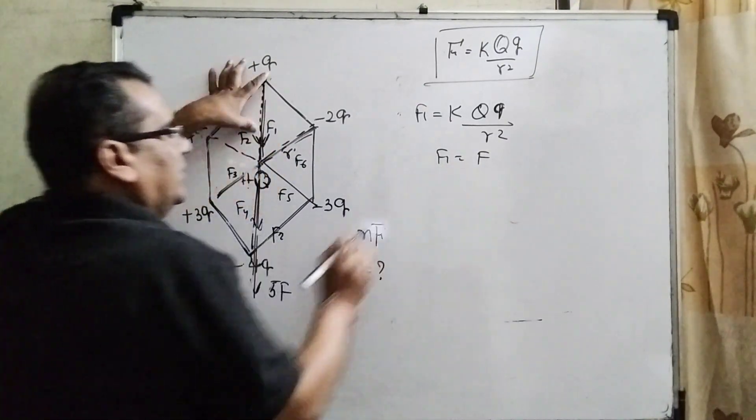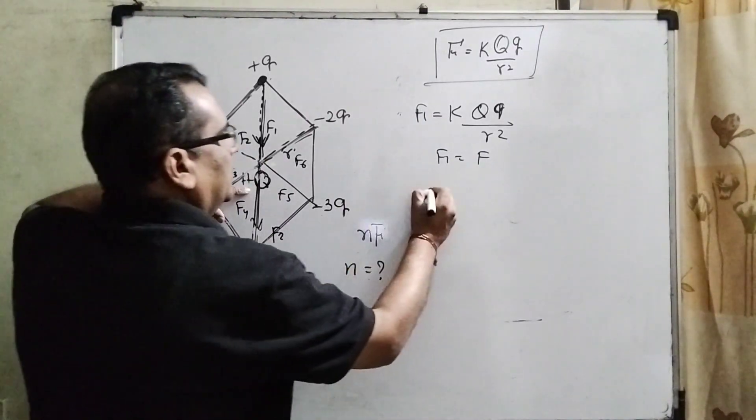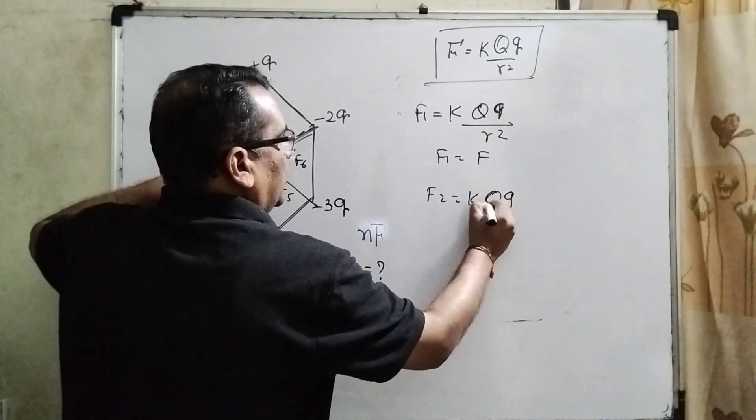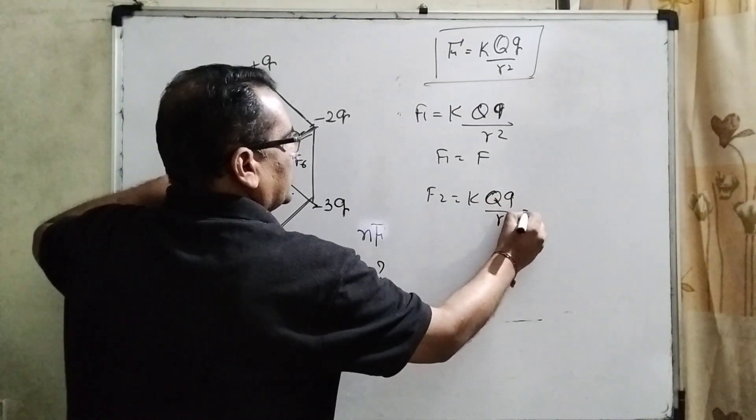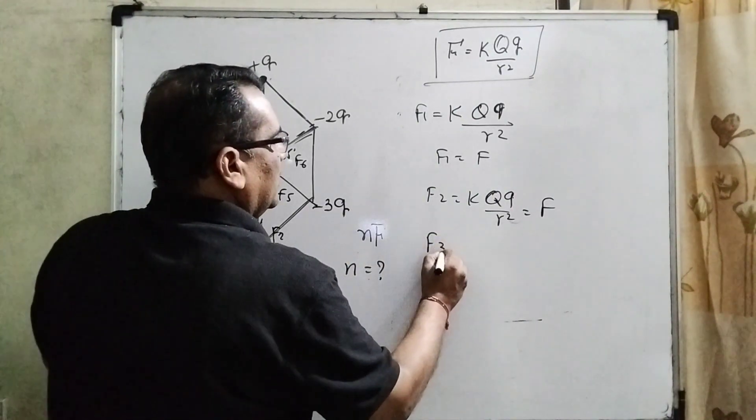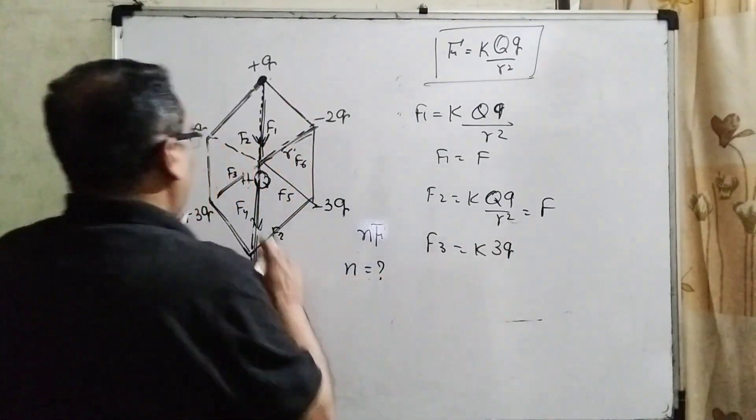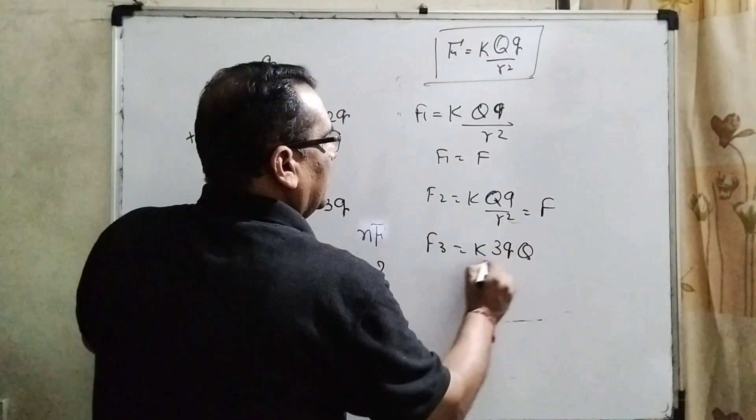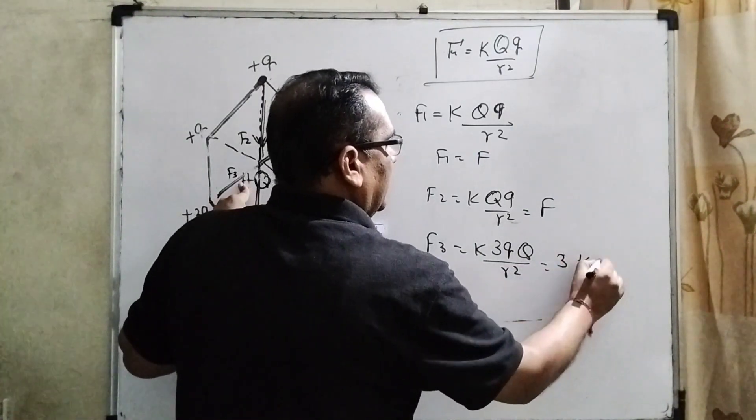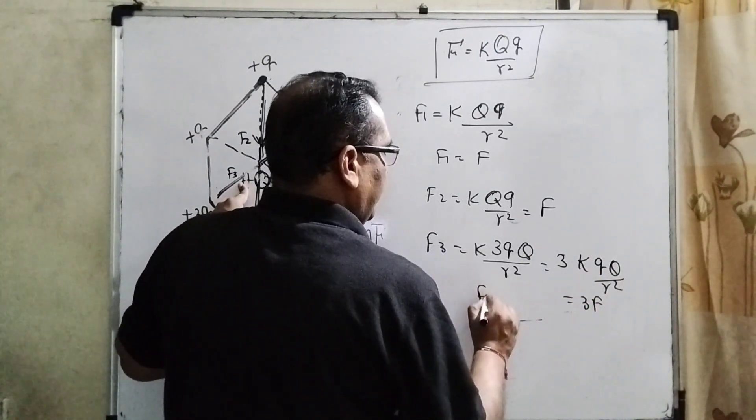Here the second point plus q and here is also plus q. Then F2 equal to k, q capital Q small q r square is again F. Then third F3, k, what is plus 3q, q and capital Q upon r square. It means 3k small q capital Q r square. It means 3F. It is F3.